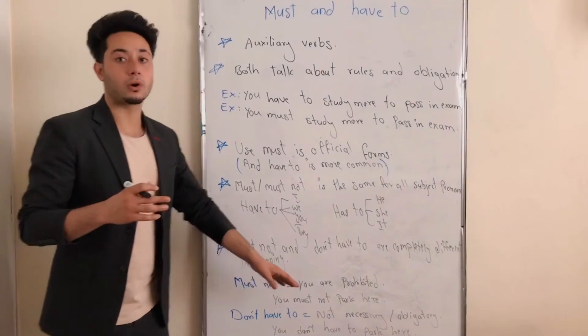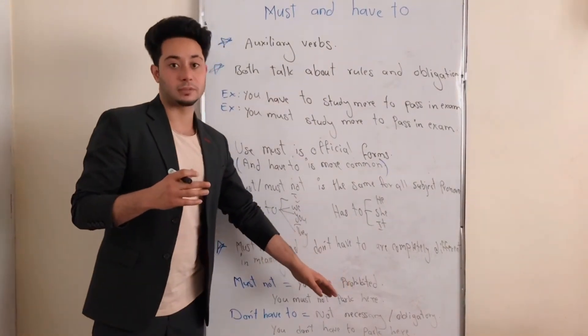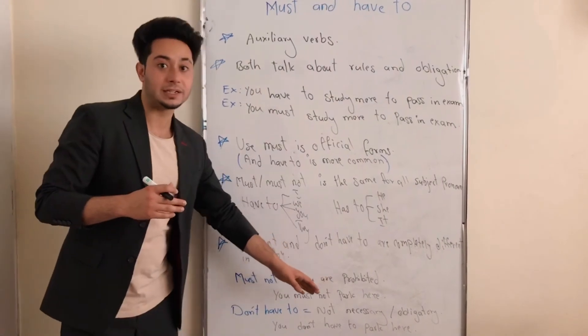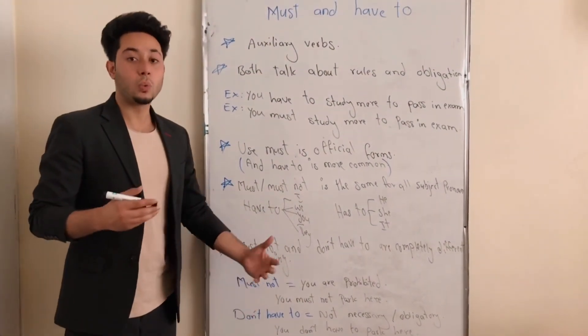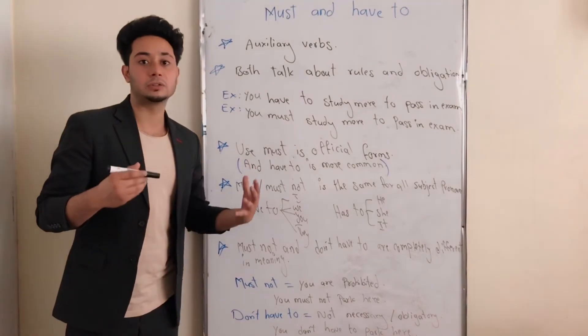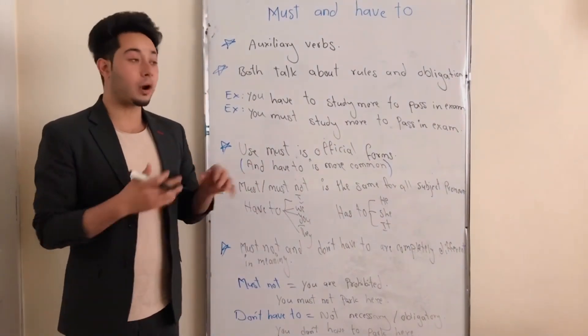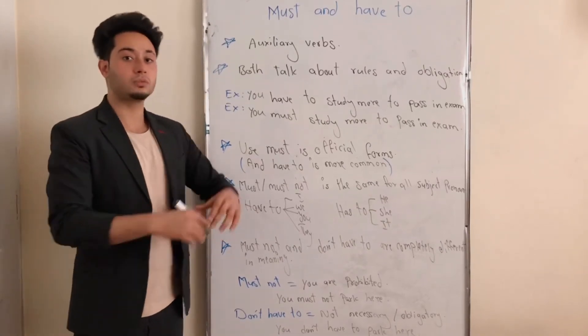We use must not when you are completely prohibited from something. For example, you must not park here. It means that you are prohibited to park here. And we use don't have to when there is nothing obligatory or necessary. For example, you don't have to park here. It means that you can park here, but it is not necessary to park your car here.